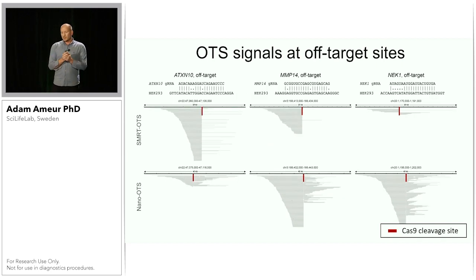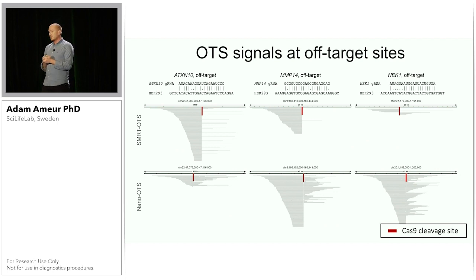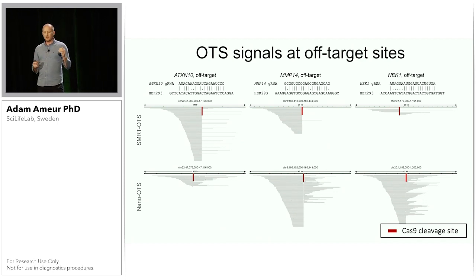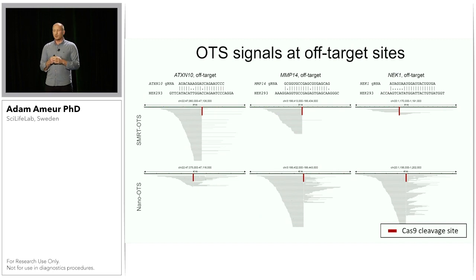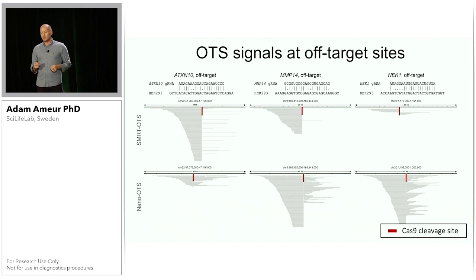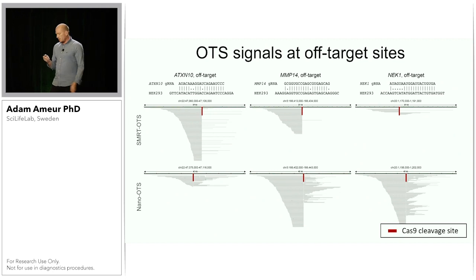Similar types of peaks also appear at other sites in the genome. Here are three off-target sites for ATXN10, MMP14, and NEC1 — with Smart OTS at the top and nanopore sequencing at the bottom — and we find these three off targets by both methods. For two of these off targets, we have three mismatches for the guide RNA compared to the HEK genome, and for the last one we actually have five mismatches but still get binding, which is kind of surprising.